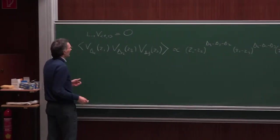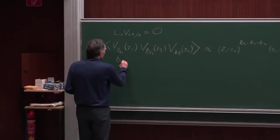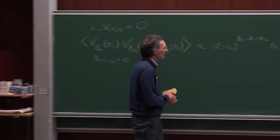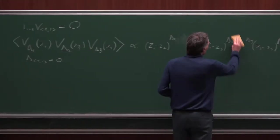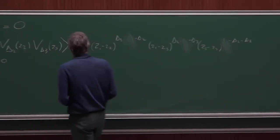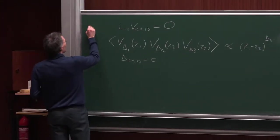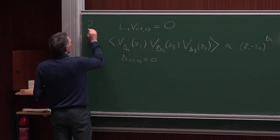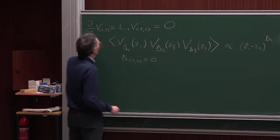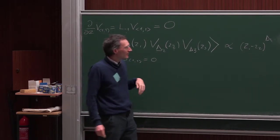Now what happens if I replace the first field with V₁₁? V₁₁ has dimension δ₁ = 0, so I put zeros instead of δ₁. But that's not all. In addition, we have this null vector, and by our fundamental axiom, L₋₁ acts as a derivative. So d/dz · V₁₁ = L₋₁ · V₁₁. Therefore, this three-point function should not depend on z₁.